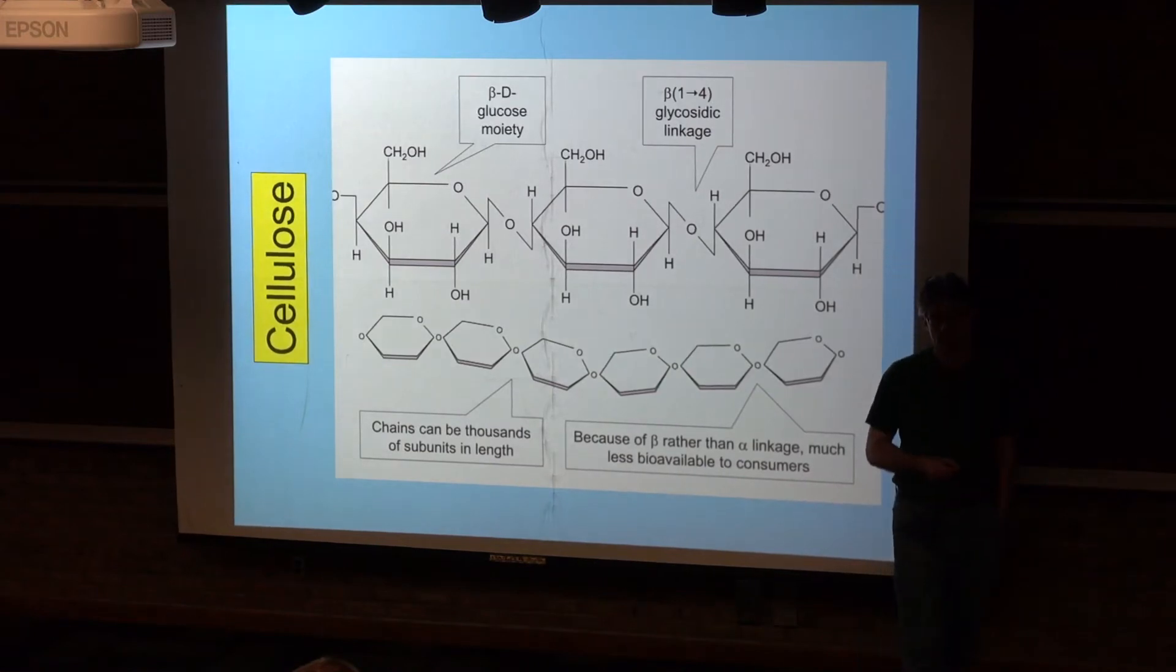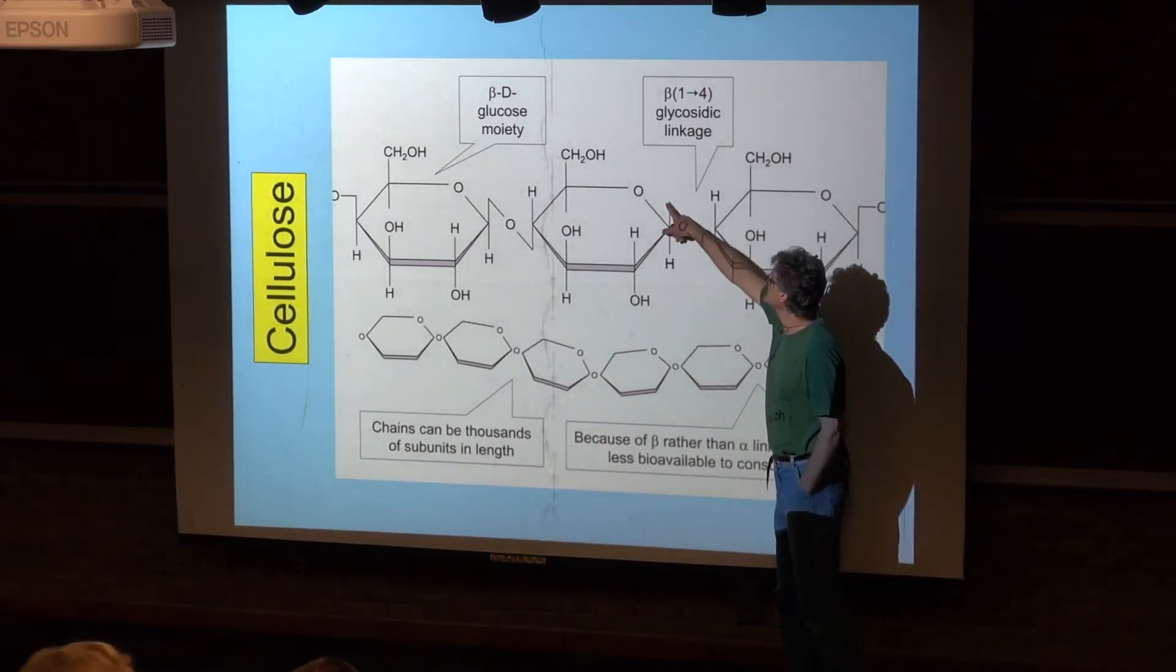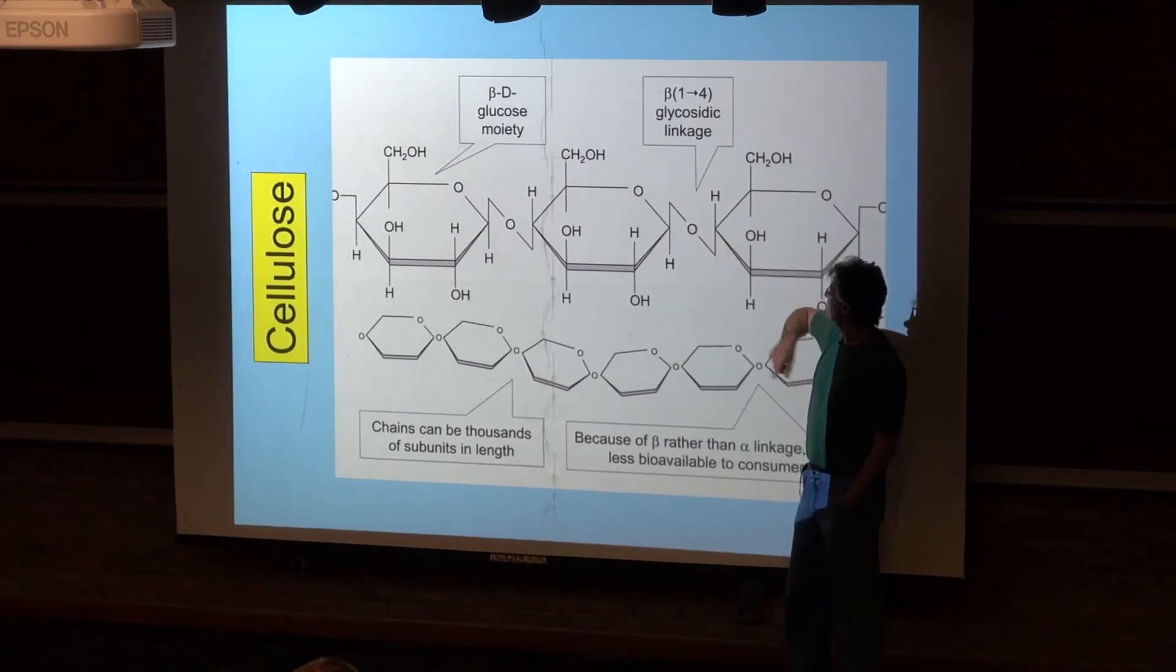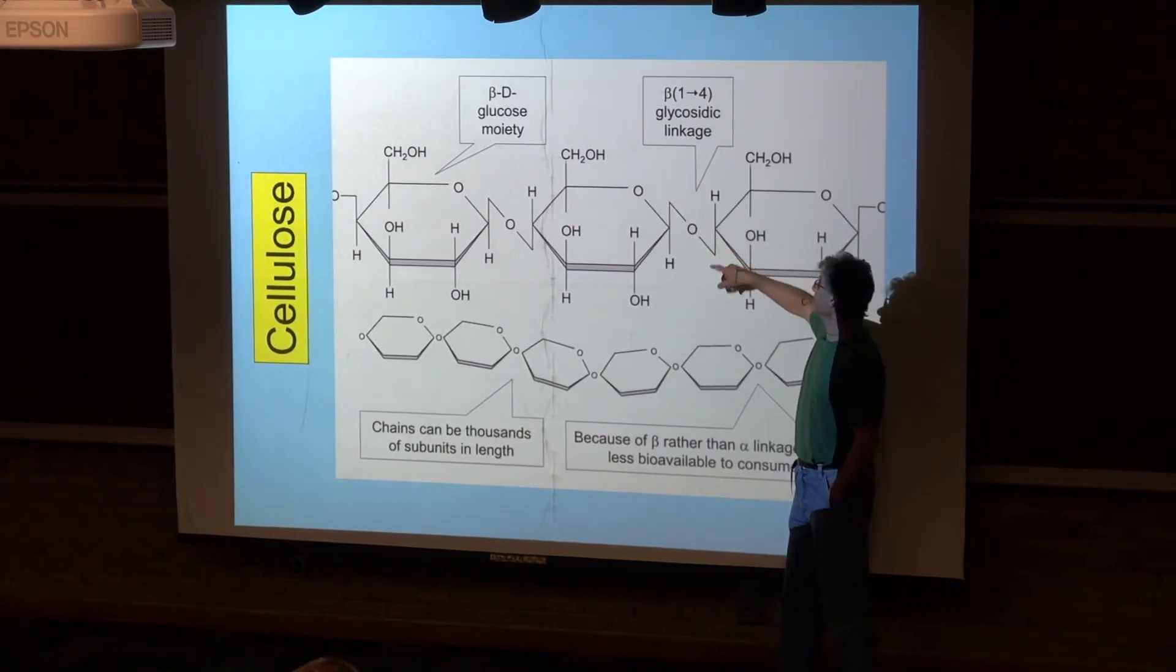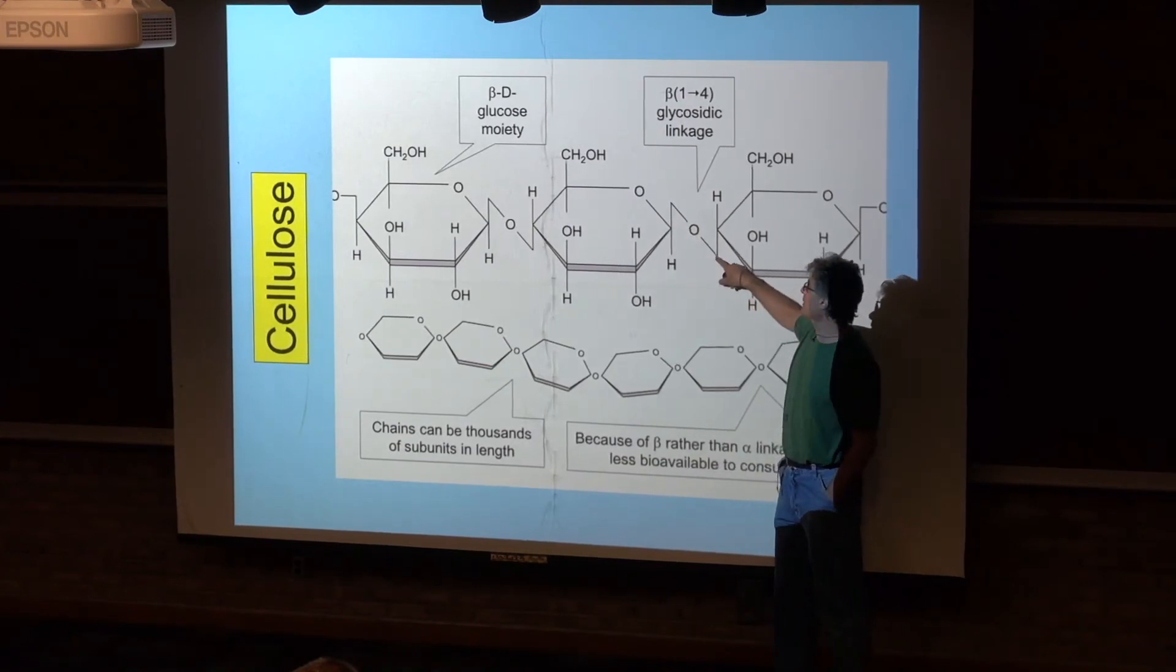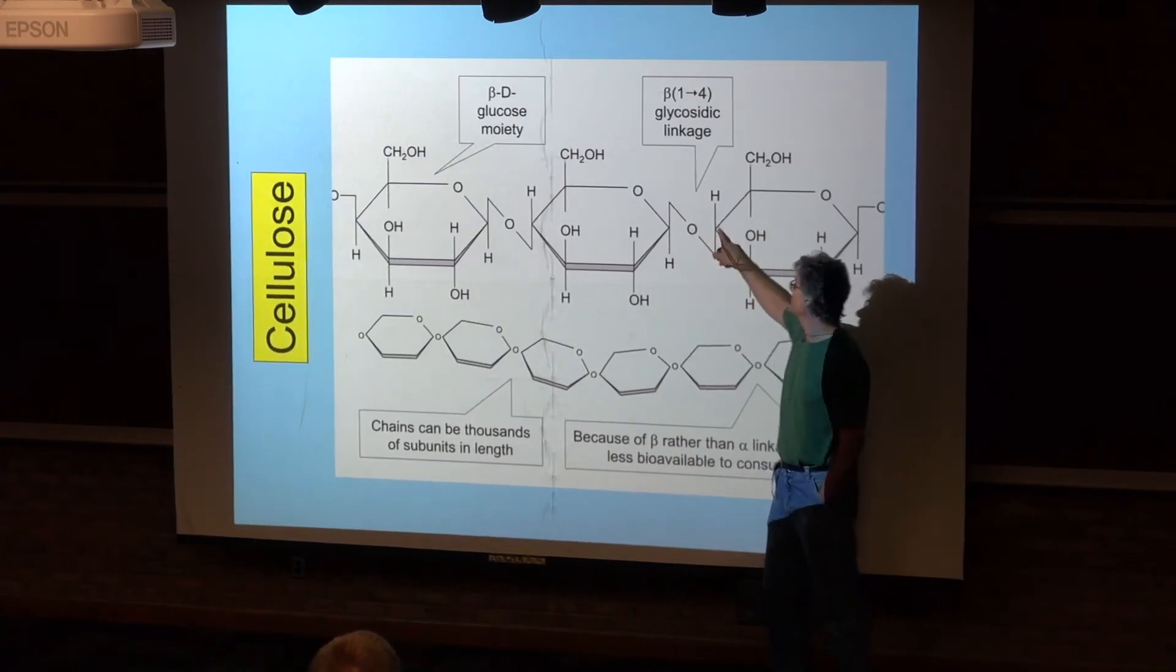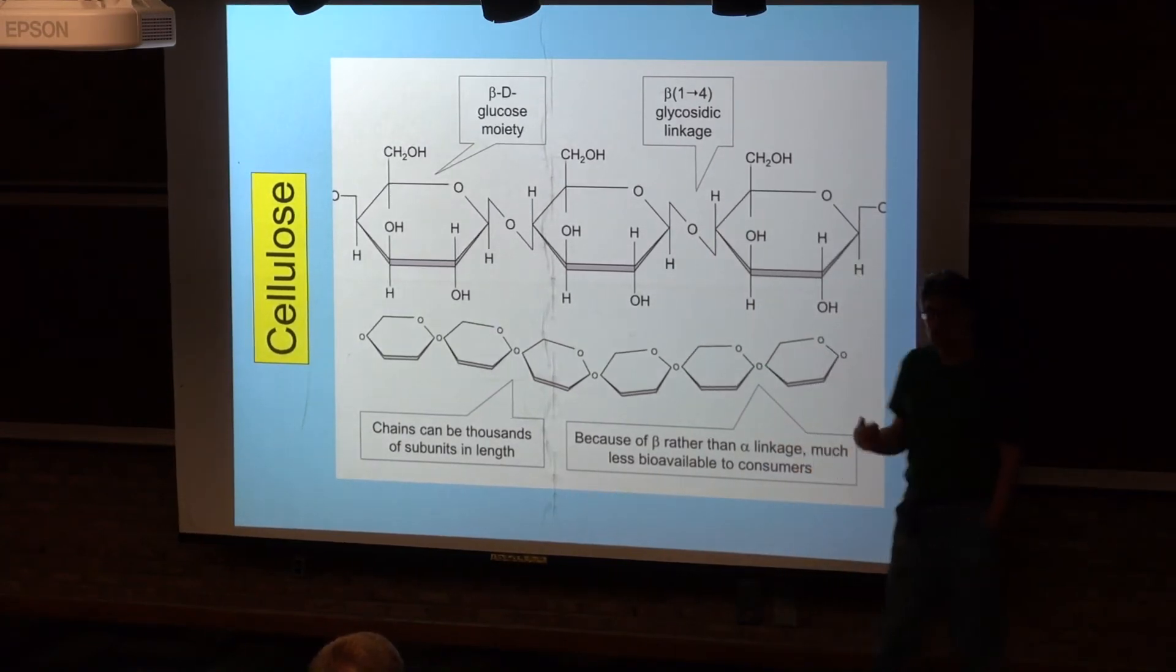And so this is the depiction of cellulose, and you can see that it's a beta-1-4 glycosidic linkage, because rather than the bond starting here and going across, it starts up here and goes across. But it's still going from the one carbon to the four carbon.